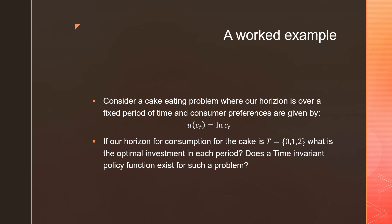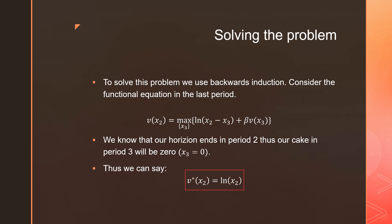If our horizon for consumption of the cake is T equal to periods 0, 1, and 2, what is the optimal investment in each period? Does a time invariant policy function exist for such a problem? Let's first solve the problem and we'll answer the second question.